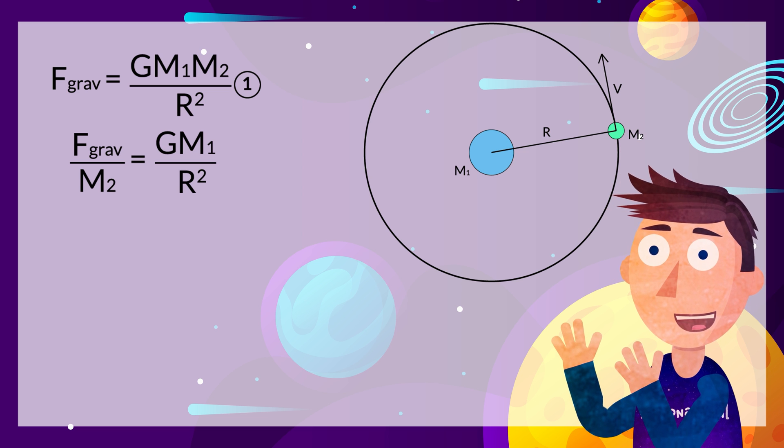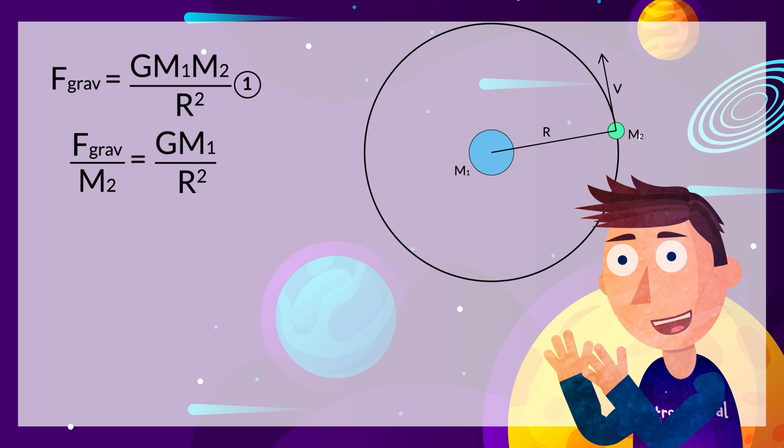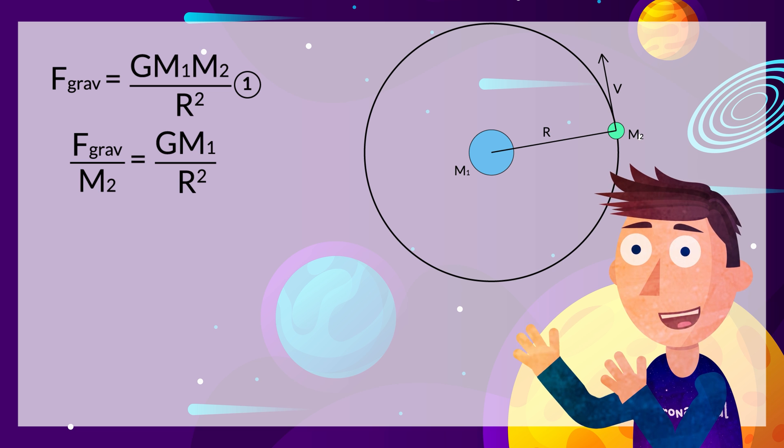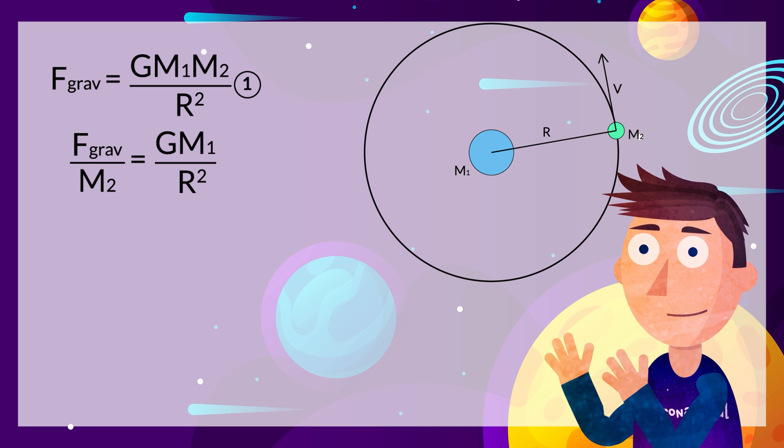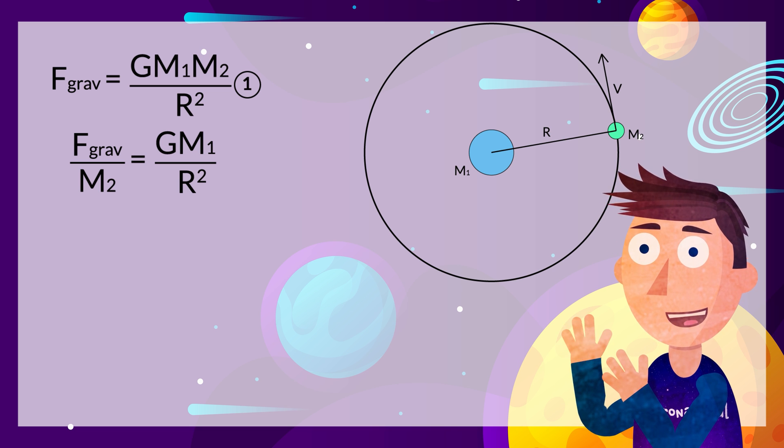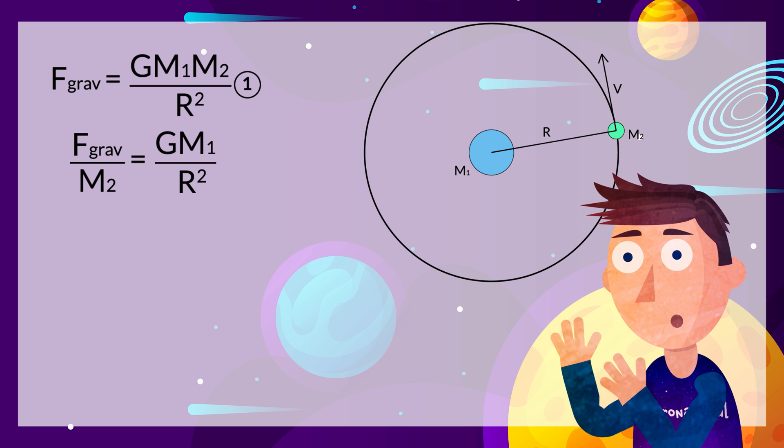So here we have two objects with masses m1 and m2, and they are separated from their centers by a distance r. We also have a gravitational constant that we believe is constant for all objects in the universe.